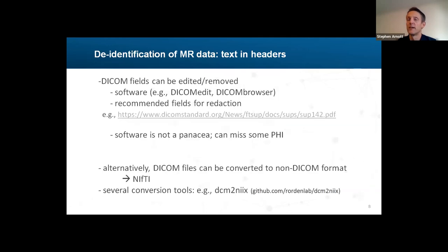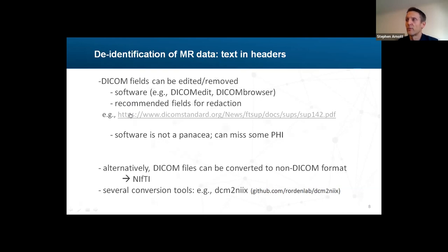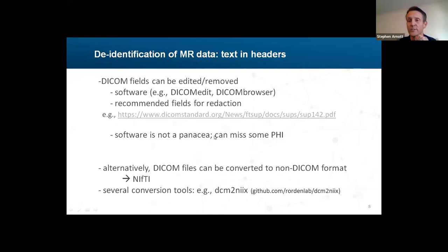Luckily, many software tools can access DICOM files and remove that information — DICOM Edit, DICOM Browser, for example. There are also resources recommending which fields should be redacted, such as a clinical trials redaction standard. However, the software is only as good as the DICOM fields entered. PHI can be missed if an MR tech inserts it in an unexpected field, and there are also private vendor tags that can be somewhat problematic.